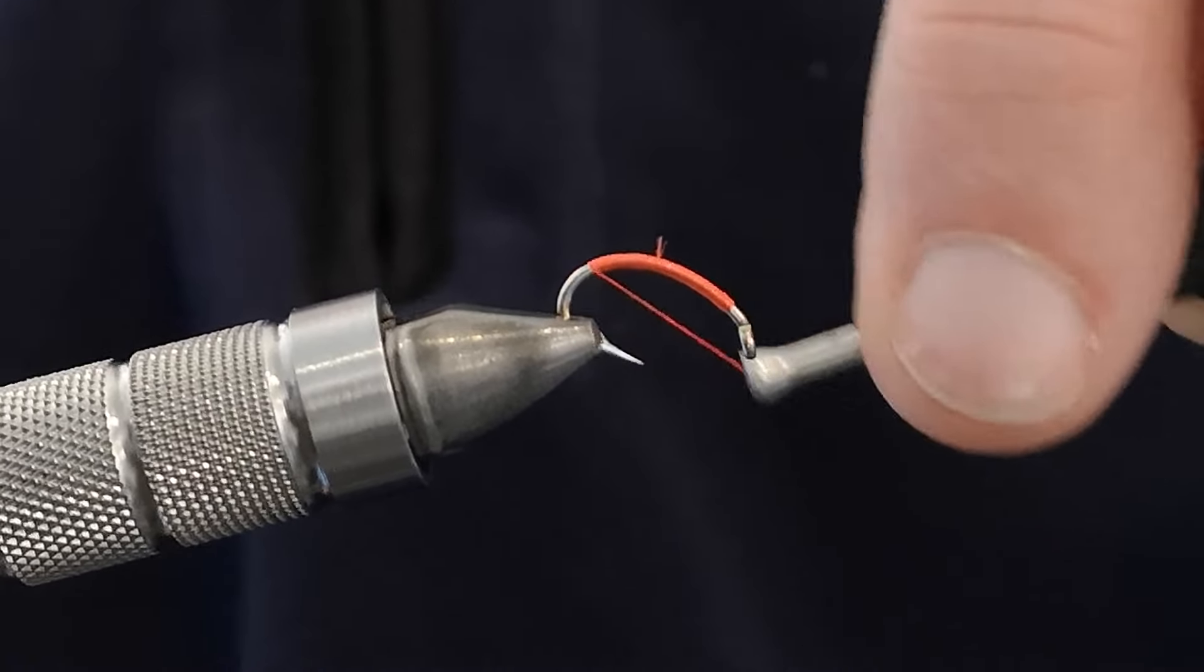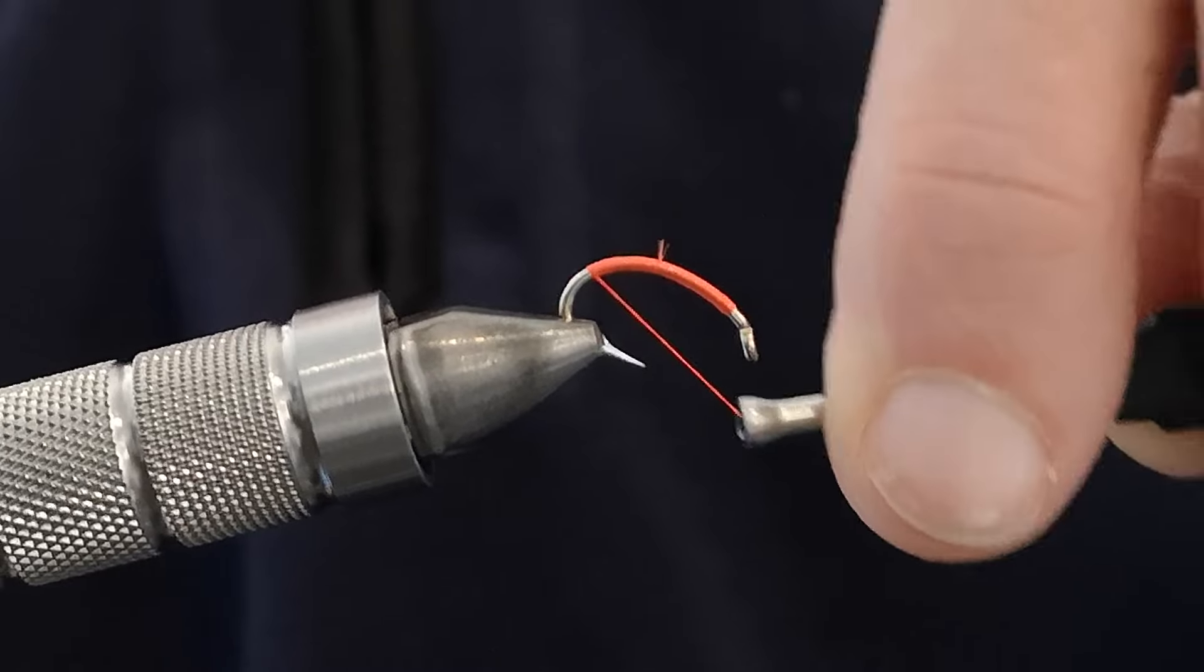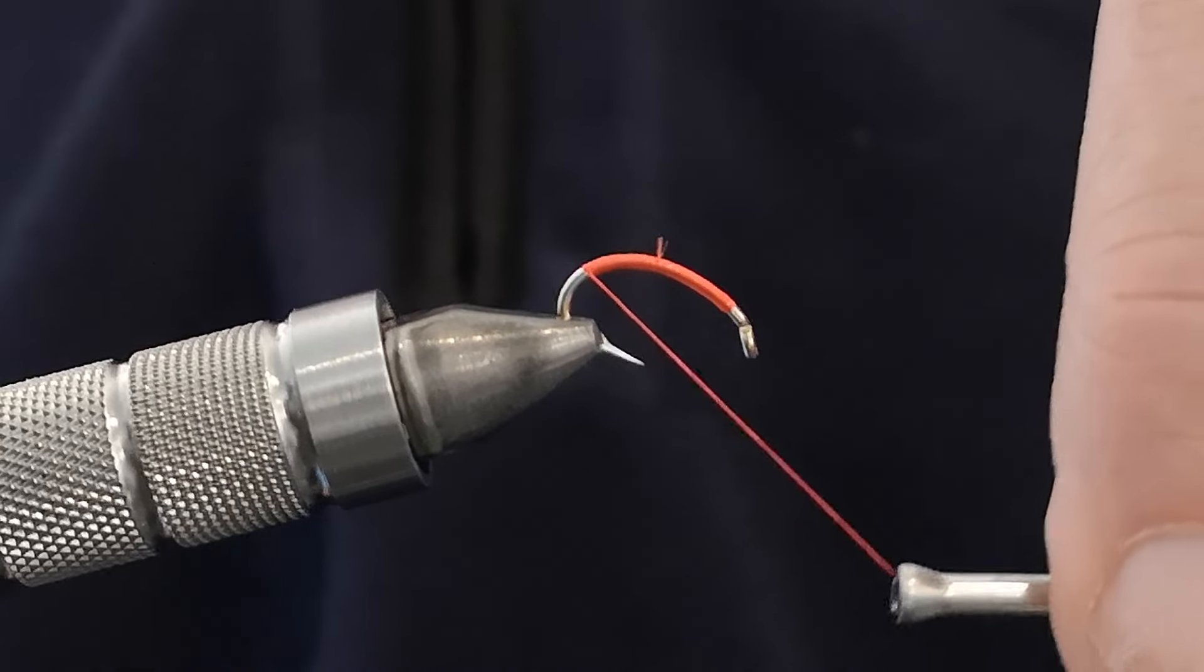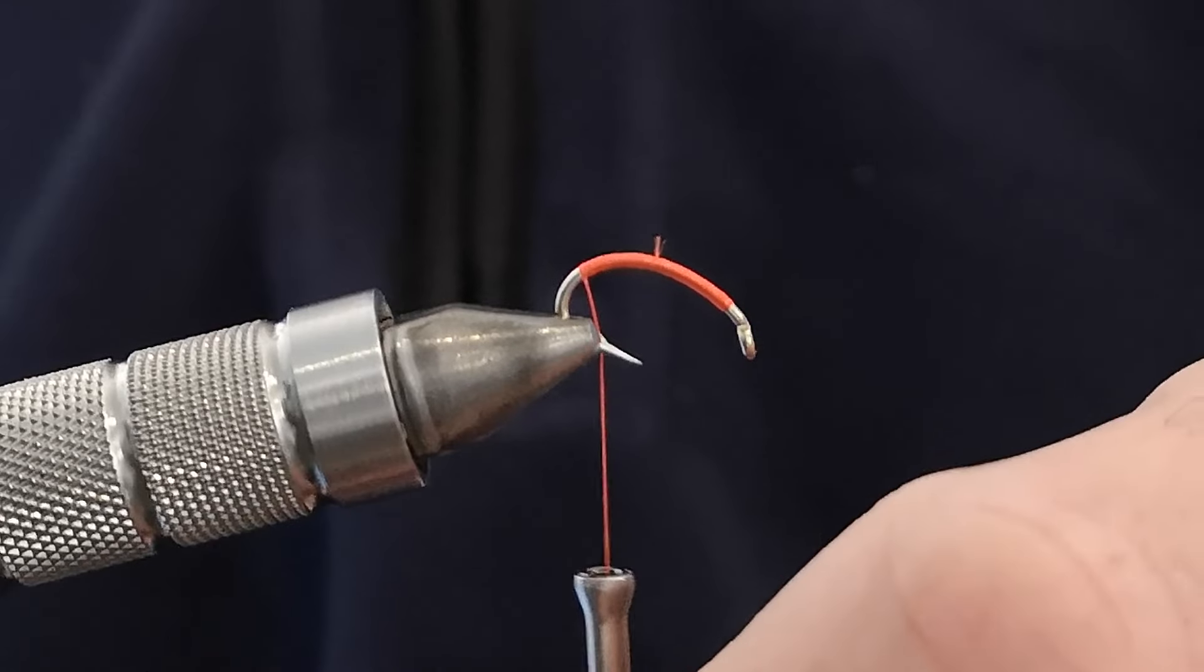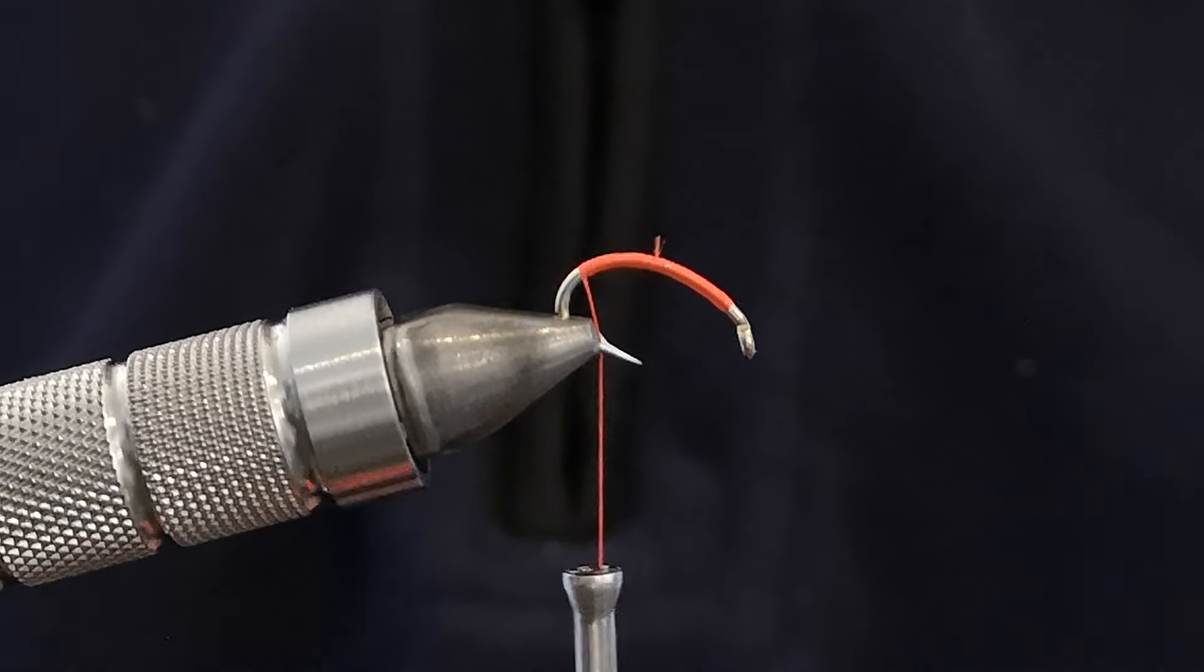And what we want to do, as always, is have two thirds body, one third thorax. So just bear that in mind when you're tying the fly.